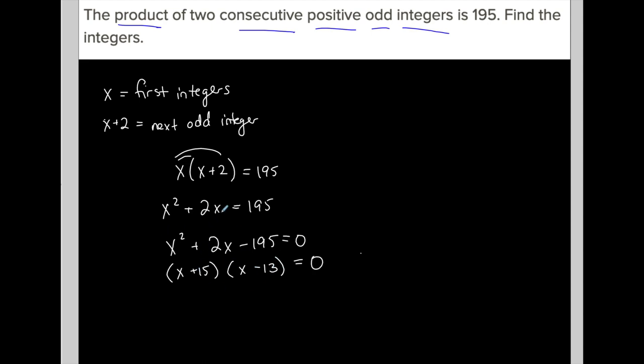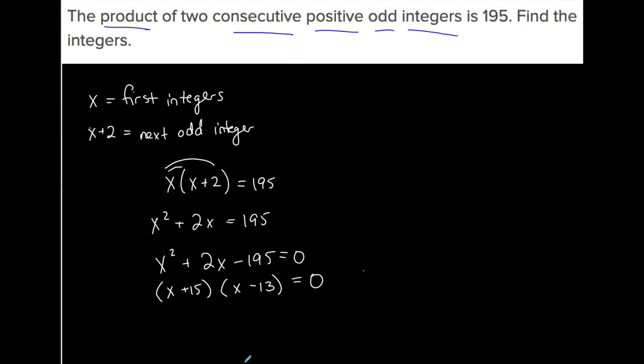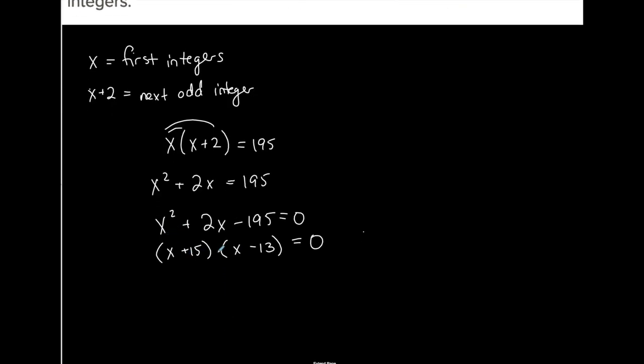Now I have a product of two expressions equal to zero, and this is where the zero product property comes into play. I set each one of these equal to zero and then solve for each one of these equations. So I get X is negative 15 or X is positive 13.